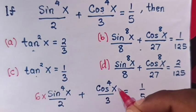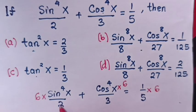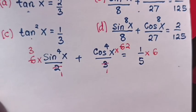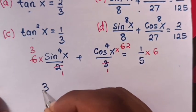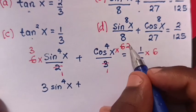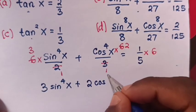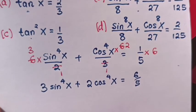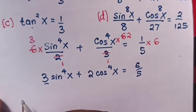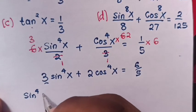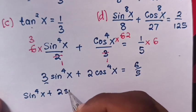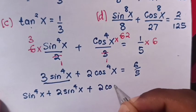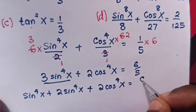We multiply by 6 on both sides. The denominators cancel and we get 3sin⁴x + 2cos⁴x = 6/5. Now, 3sin⁴x is the same as sin⁴x + 2sin⁴x, so our equation is sin⁴x + 2(sin⁴x + cos⁴x) = 6/5.